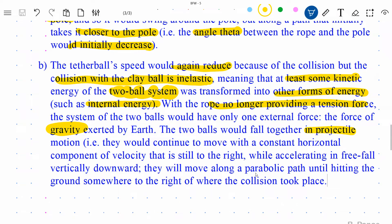And with the rope no longer providing a tension force, the system of the two balls would have only one external force, and that is the force of gravity exerted by Earth. And yes, that would be an external force since I've made my system composed of just the two balls that are now stuck together. So the two balls would fall together in projectile motion. I was tempted to maybe just leave it as that, but again, why take any chances? If you're writing up a paragraph-length response, you might as well give details. So I clarified what I meant by projectile motion to say: i.e., they would continue to move with a constant horizontal component of velocity that is still to the right, since that's the way they were moving, while accelerating in free fall vertically downwards. They will move along a parabolic path until hitting the ground somewhere to the right where the collision took place.